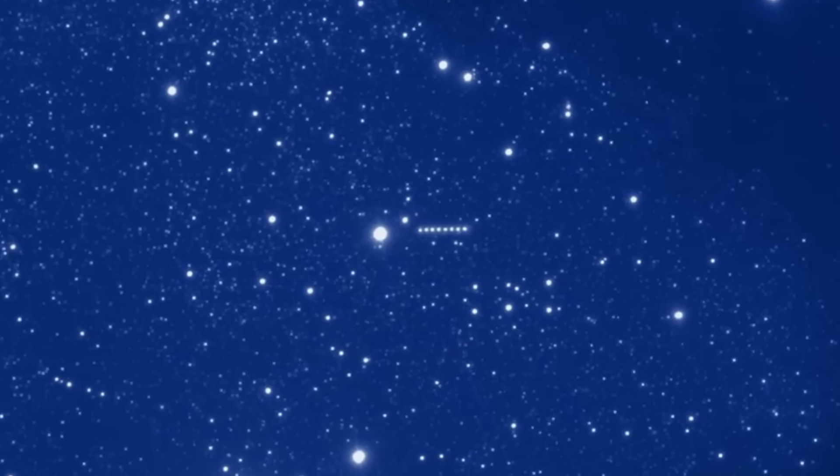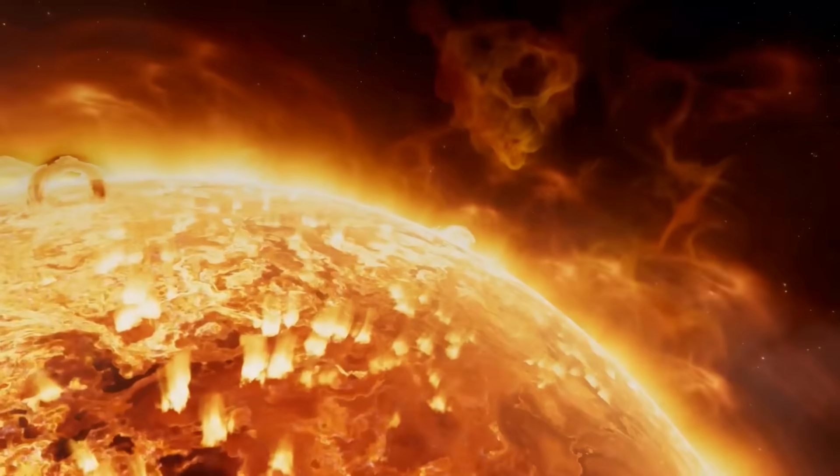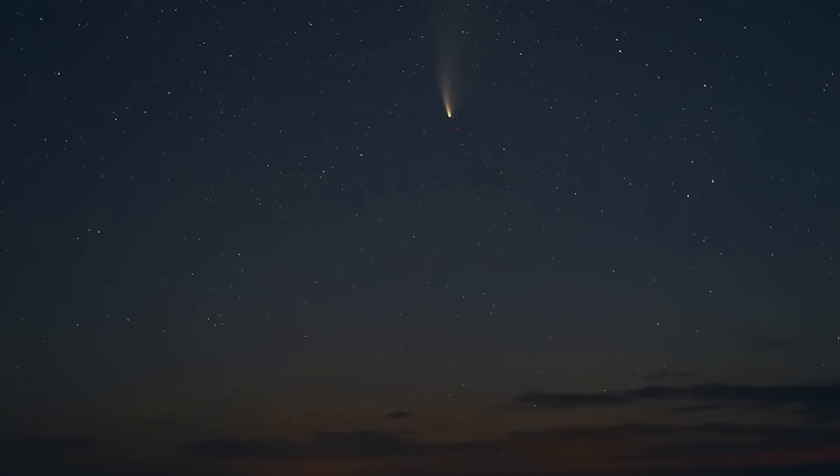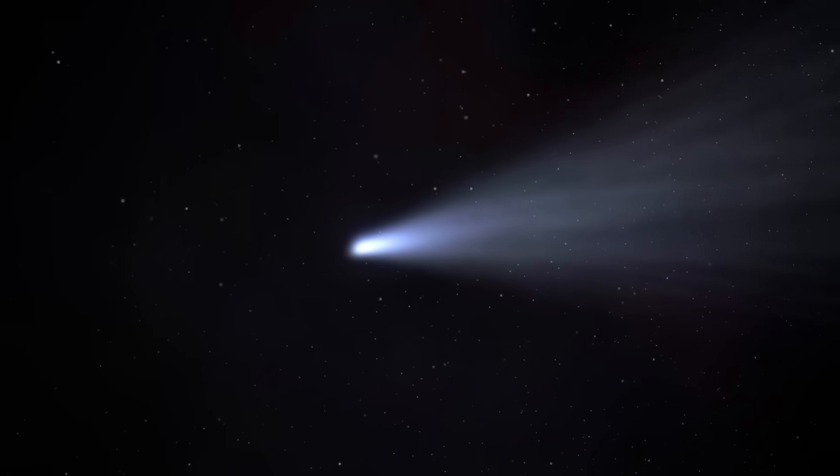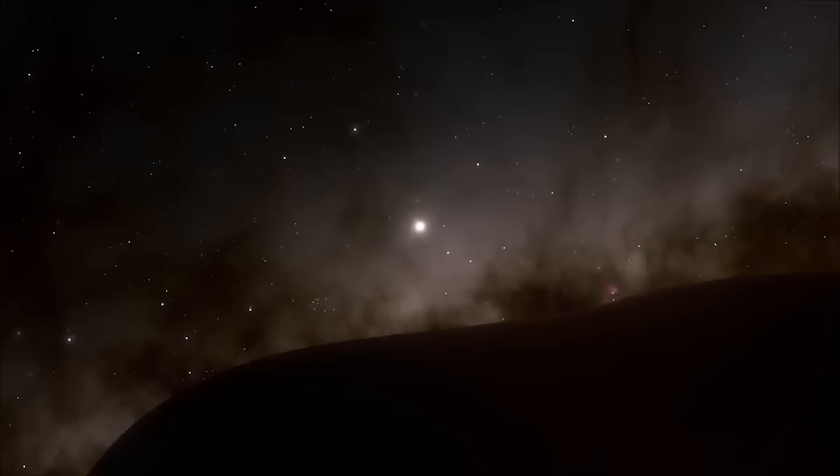As 3i Atlas journeyed inward, the sun's warmth began to work its magic, causing its ice to sublimate, turning directly into gas and dust to form a glowing coma and a spectacular tail.